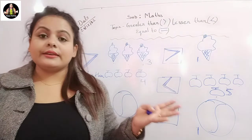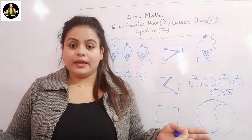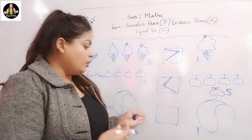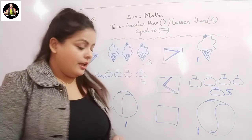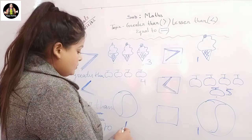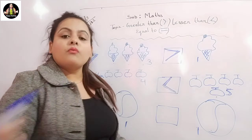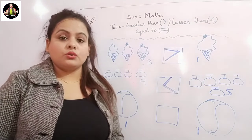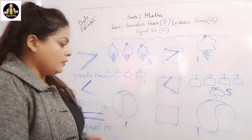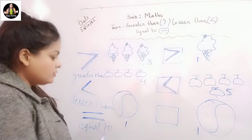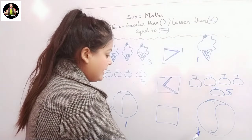Now the alligator is confused. Both sides we have the same number — here we also have one number and here we also have one number. So we are confused. Whenever we see the same number on both sides...